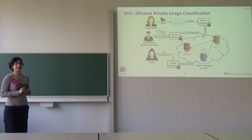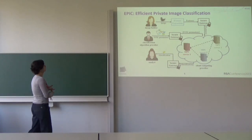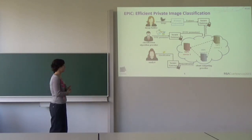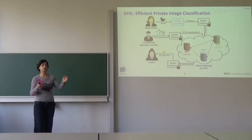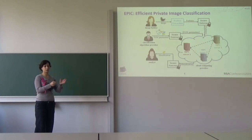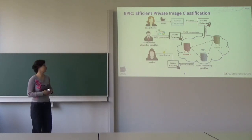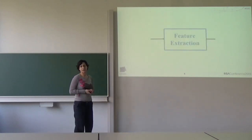EPIC is a secure, efficient, and accurate solution to tackle the private image classification problem. One of the ways we gain efficiency is by offloading as much of the tasks to the public domain, so that we don't have to perform costly operations in the privacy-preserving domain — and that's exactly the feature extraction phase.